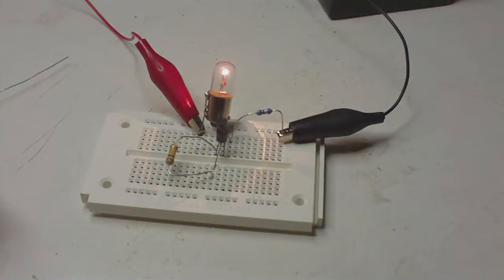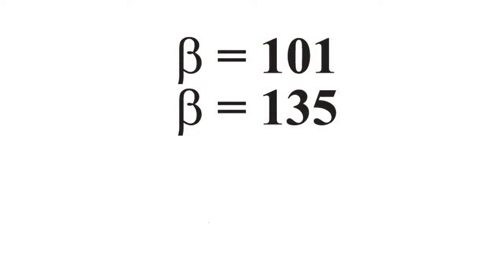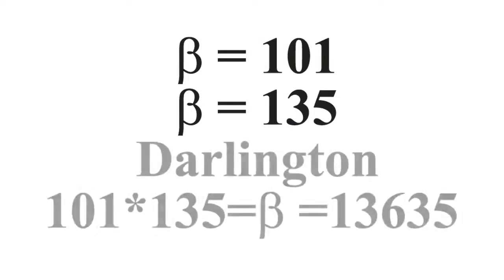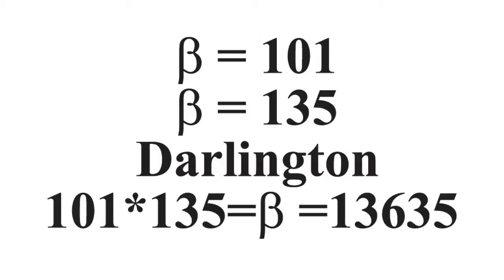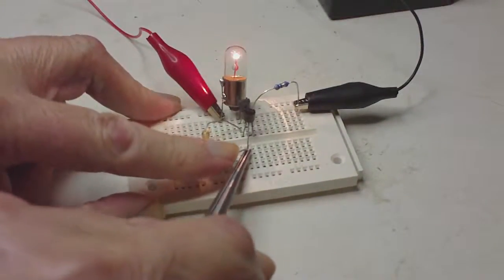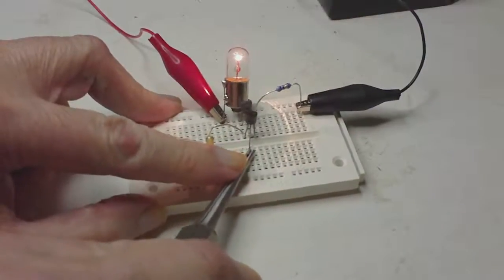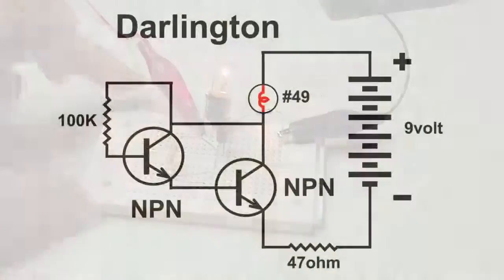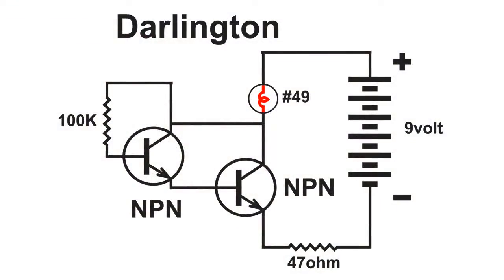The reason why the bulb now lights is because the amplification factor of each transistor is not added together, you multiply them together. So now we have at least an amplification factor using these two transistors of 13,635. That is a dramatic increase in the amplification factor of those two transistors in this configuration of a Darlington circuit.